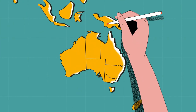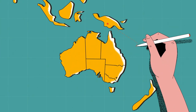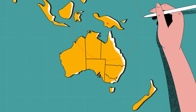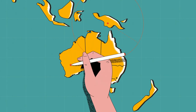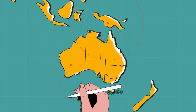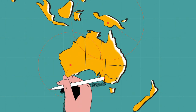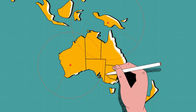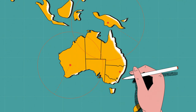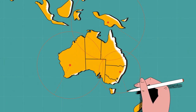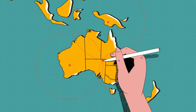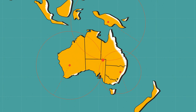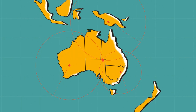Seismologists can determine the epicenter by drawing circles on a map showing the radius of the distance from the earthquake of three or more seismic recording stations. The point where these circles intercept determines the epicenter of the earthquake. This method is known as triangulation.